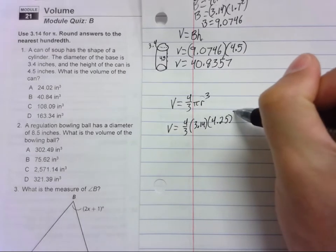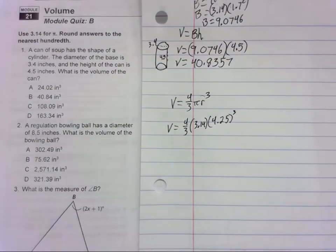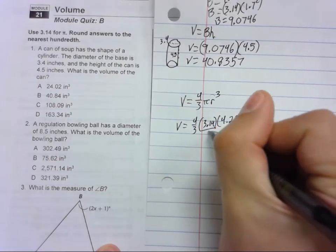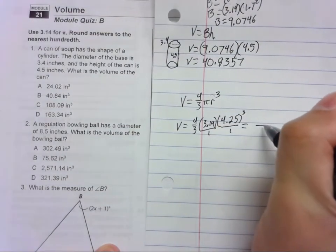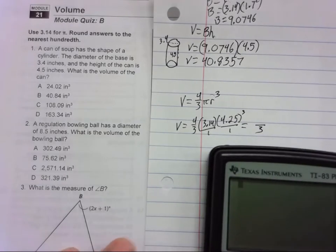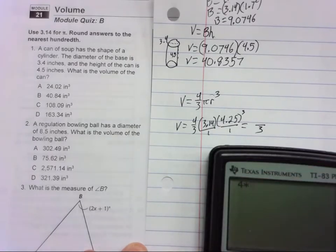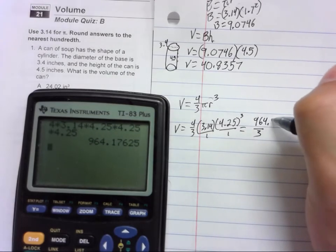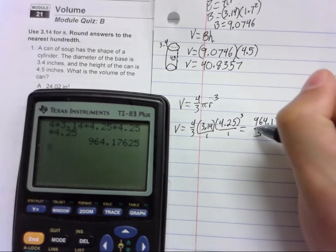We're going to need to cube that. So now we just multiply it out. Four-thirds, I would put this all over one, and at the end we're going to divide by three. So just multiply across the top. We'd have 4 times 3.14 times 4.25 times 4.25 times 4.25, and we get a nice big number, but we are going to plug that in: 964.17625.